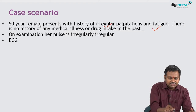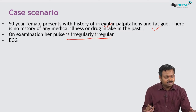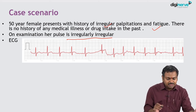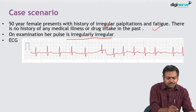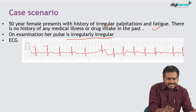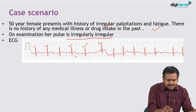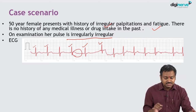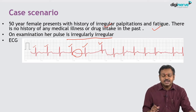On examination, her pulse is irregularly irregular. Looking at the ECG, the P waves are not clearly seen, the RR intervals are irregular, and there are subtle fibrillary waves. So this ECG is showing absence of P waves, irregular RR intervals, and subtle fibrillary waves.